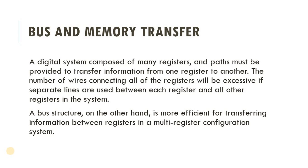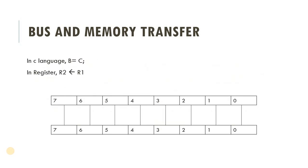To understand this with an example: in C language we transfer data like B equals C, meaning the value of C is replaced in variable B. Similarly in registers, we use the replacement operator to replace the data of register 1 into register 2. This is the basic transferring concept of a register.